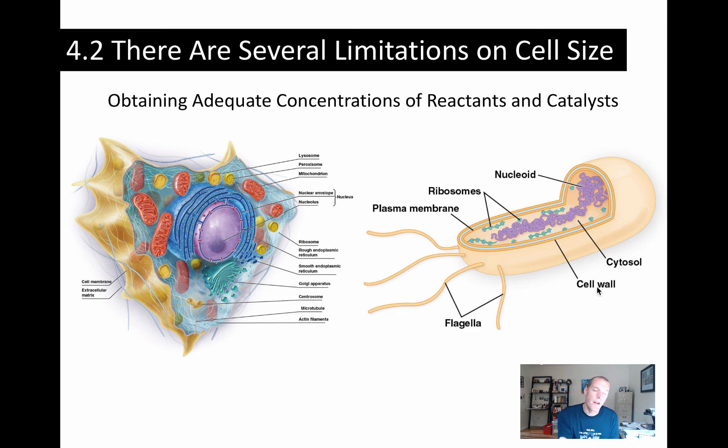So make sure you can think about organelles and how they overcome this problem of cells getting bigger. Now if we didn't have these, then things would grow much, much slower than they already do. So the compartmentalization helps cells achieve reasonable growth and division rates.